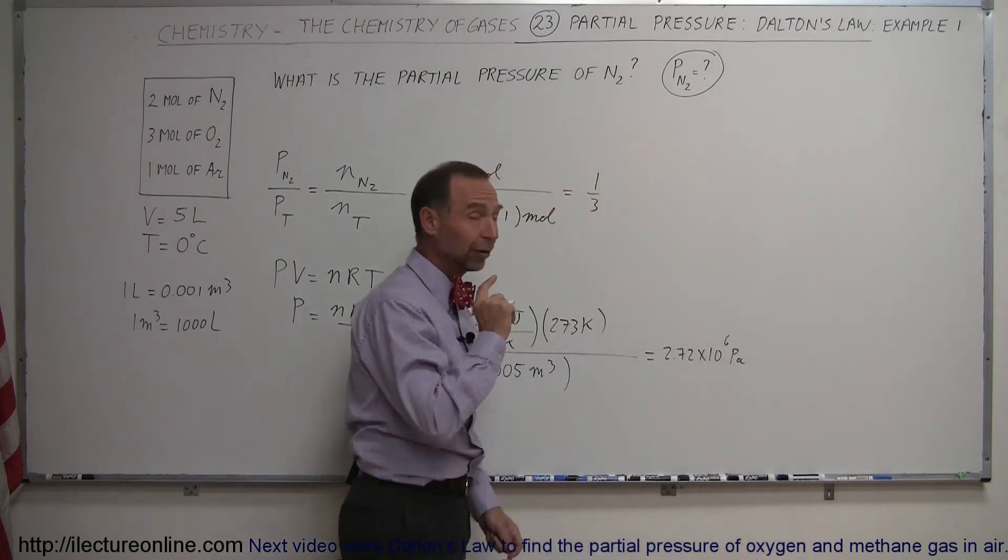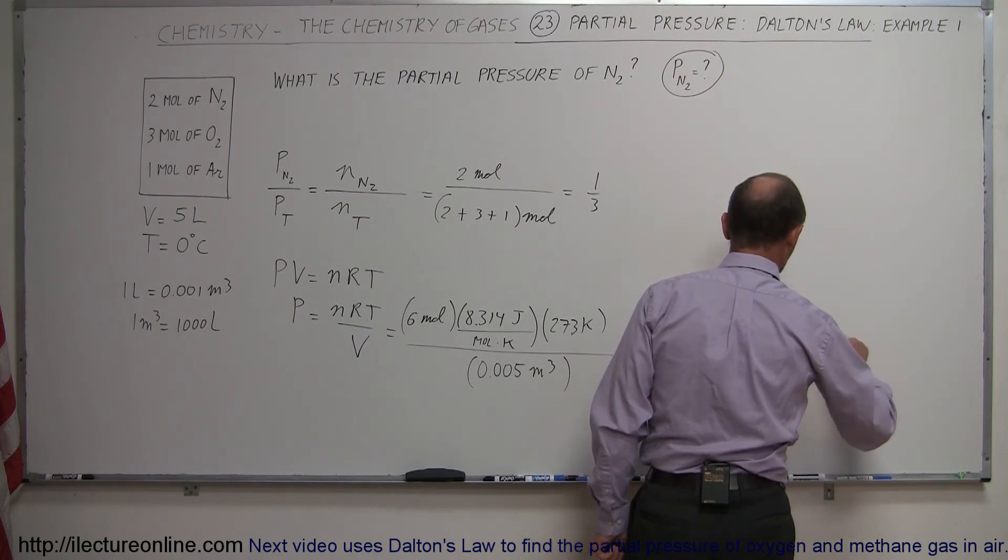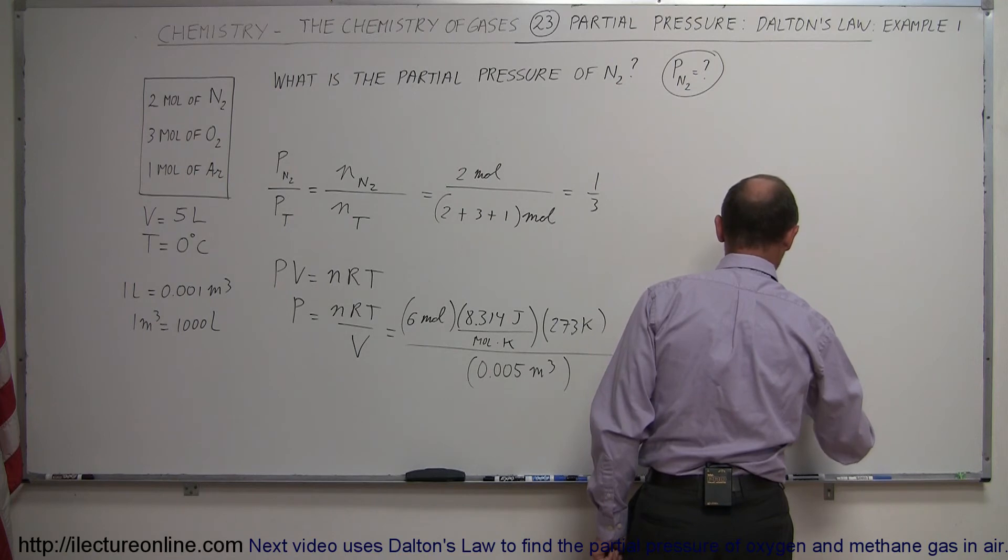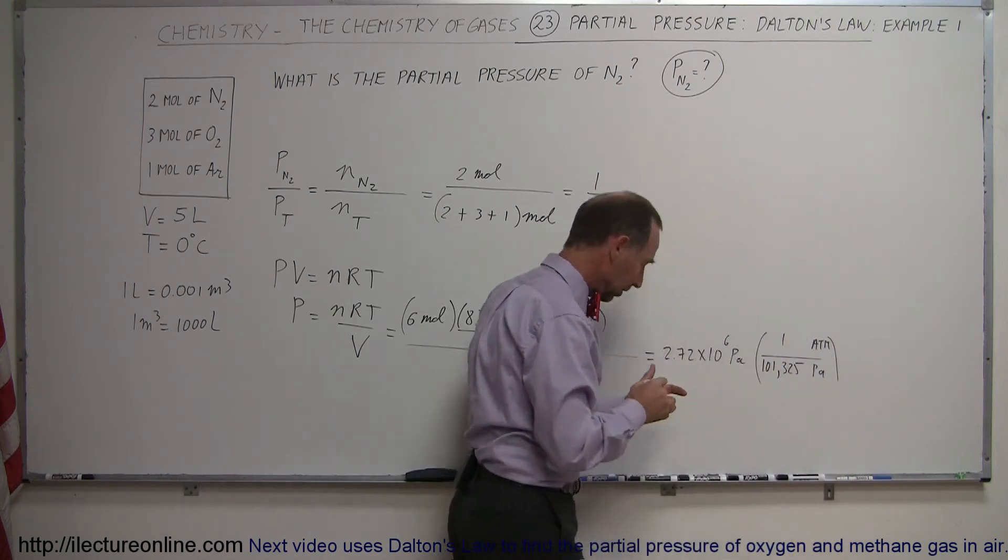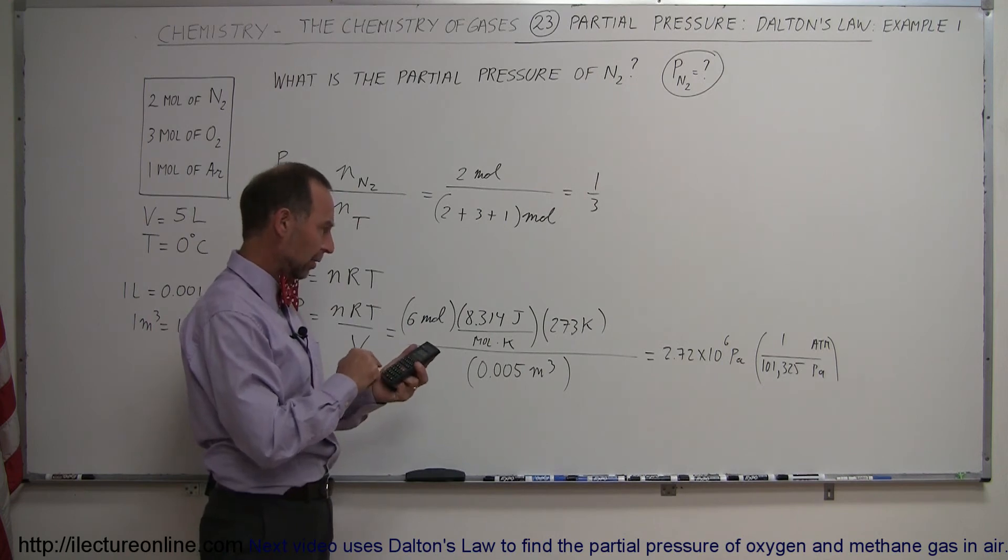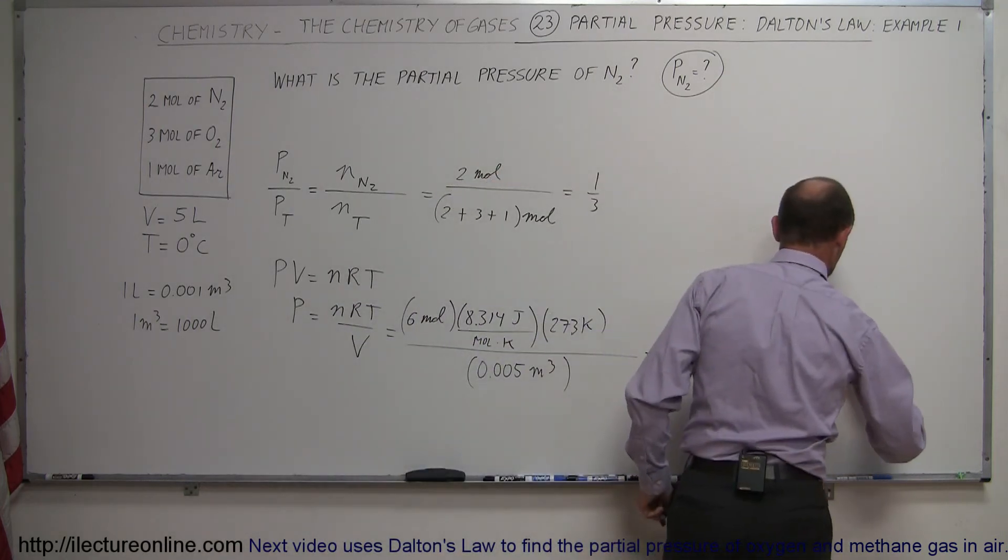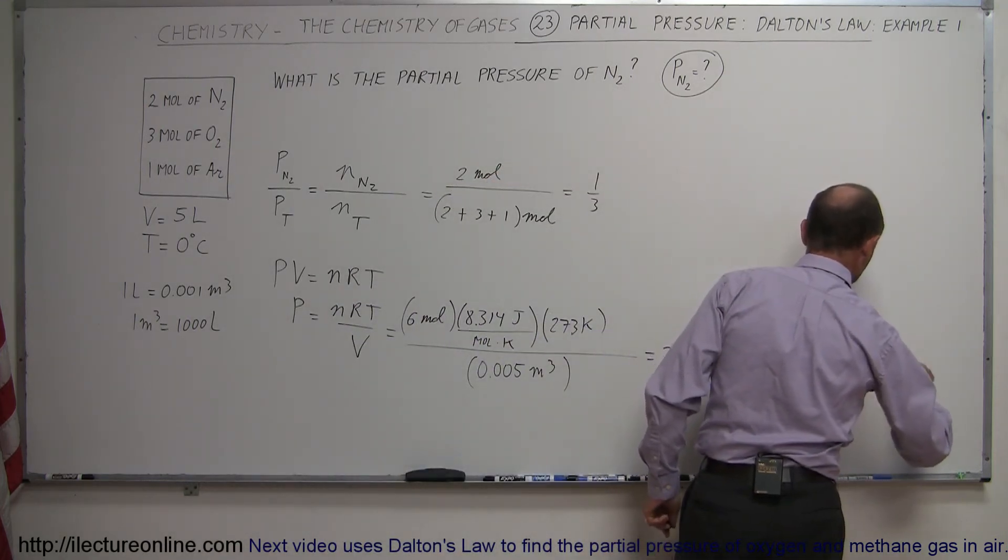Now, how do you convert that to atmospheres, in case you're wondering? Well, we can convert, make this atmospheres at the top, pascals at the bottom. One atmosphere is 101,325 pascals. So if we divide that by 101,325, we get 26.9, roughly speaking, 26.9 atmospheres.